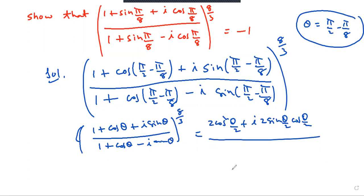2cos(θ/2) cancels. cos(θ/2) plus i sin(θ/2) to the power 8/3.